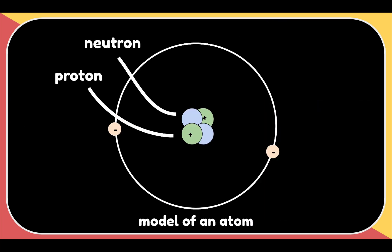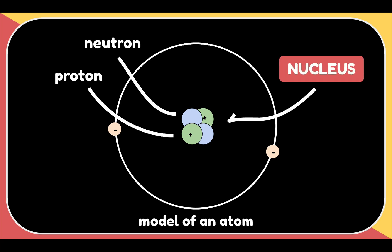Protons and neutrons are located in what we call the nucleus or the center of the atom. Because protons have a positive charge and neutrons have no charge, we can say that the nucleus has an overall positive charge.